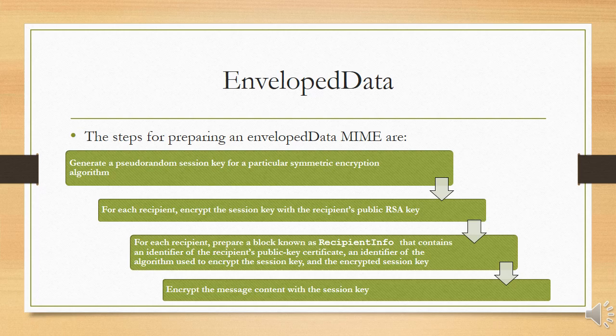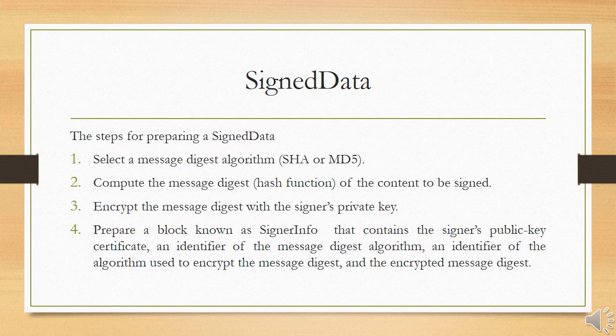To recover the encrypted message, the recipient first strips off the Base64 encoding. Then the recipient's private key is used to recover the session key. Finally, the message content is decrypted with the session key.